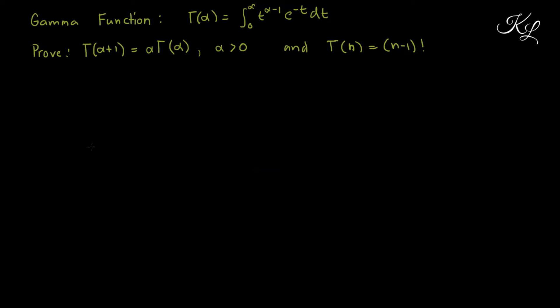Hello everyone. In this video, I'm going to show you how to prove some of the identities of the gamma function: Γ(α+1) = α·Γ(α), where α > 0, and then I'm going to prove that Γ(n) = (n−1)!. Let's now do the proof.